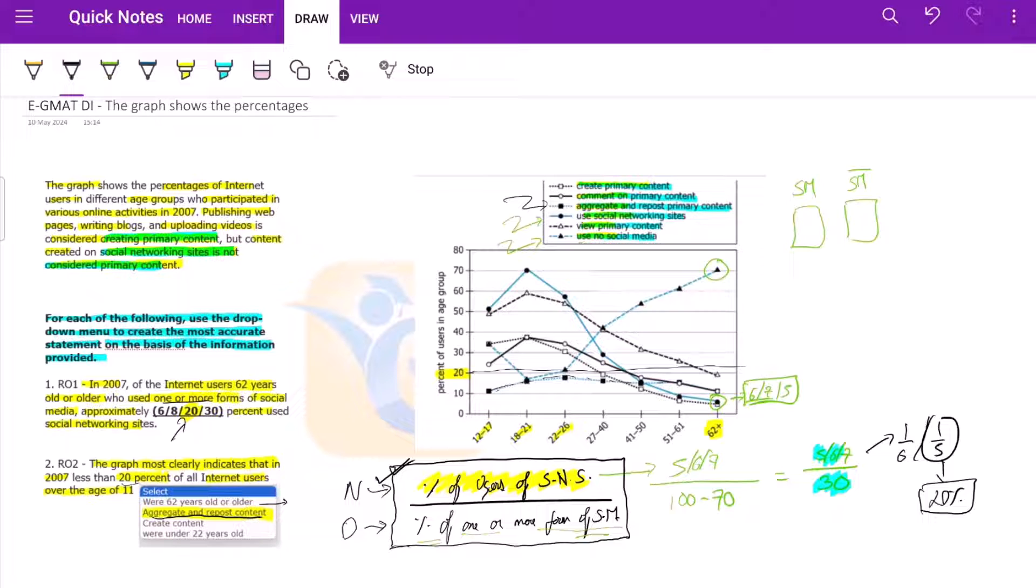Also, since the options are far apart from 20, any of these - 5, 6, or 7 - would work. We do not actually necessarily need to know the exact value here. So yeah, hope you like this video. Do subscribe to our channel and we would come back with much better videos.